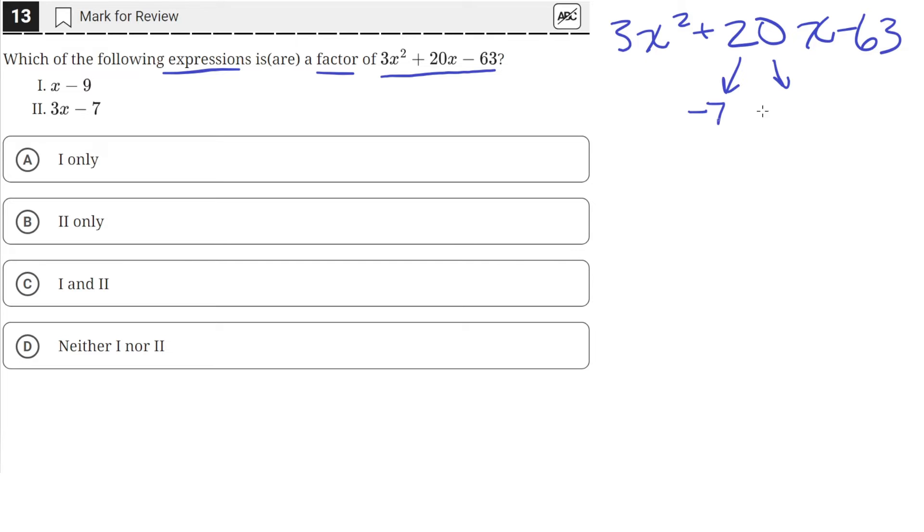And in this case, those two terms are negative 7 and 27, because 7 times 27 is equal to 3 times negative 63. But negative 7 plus 27 gives us back the 20x.